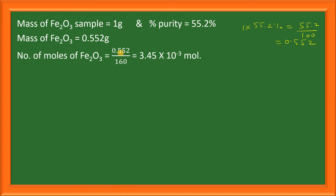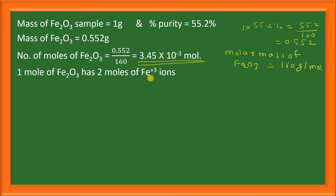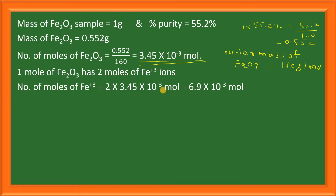Number of moles of Fe2O3 will be mass of Fe2O3 divided by molar mass of Fe2O3. The molar mass of Fe2O3 is 160 grams per mole. So number of moles of Fe2O3 comes out to be 3.45 × 10⁻³ moles. Since one mole of Fe2O3 has two moles of Fe³⁺ ions, number of moles of Fe³⁺ ions is 6.9 × 10⁻³ moles.